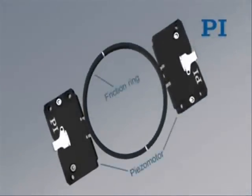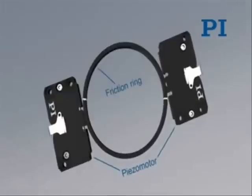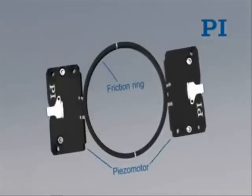The friction ring is pivot-mounted. This preloading clamps the drive in the rest position.